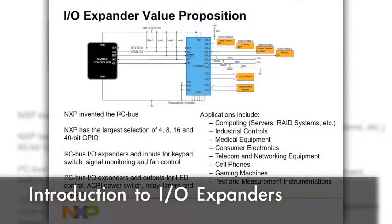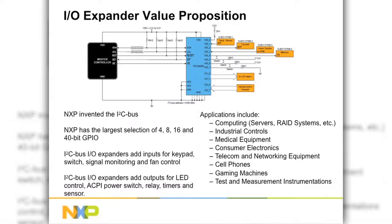This is a demonstration of the general purpose input and output devices found on the I2C bus. NXP's general purpose input-output expanders are a simple, cost-effective way to monitor and control several peripheral signals.